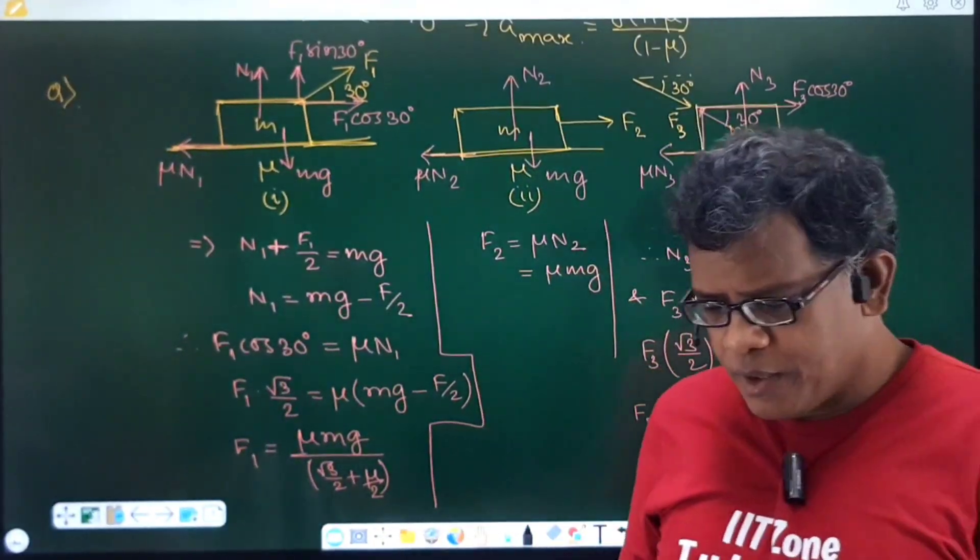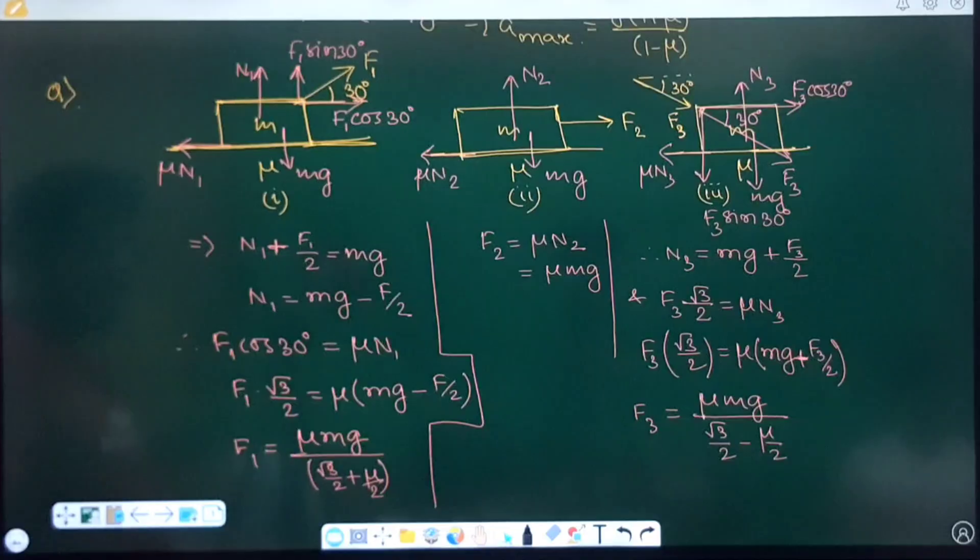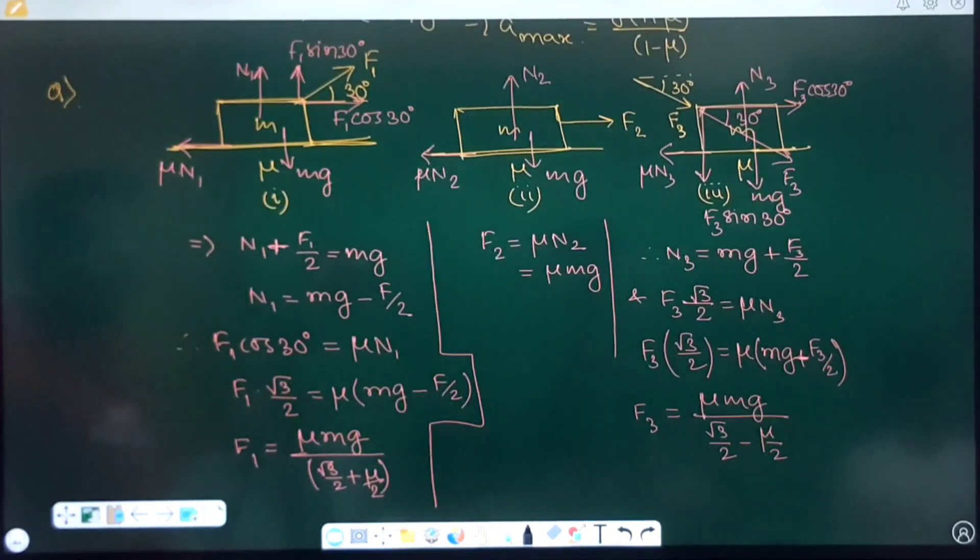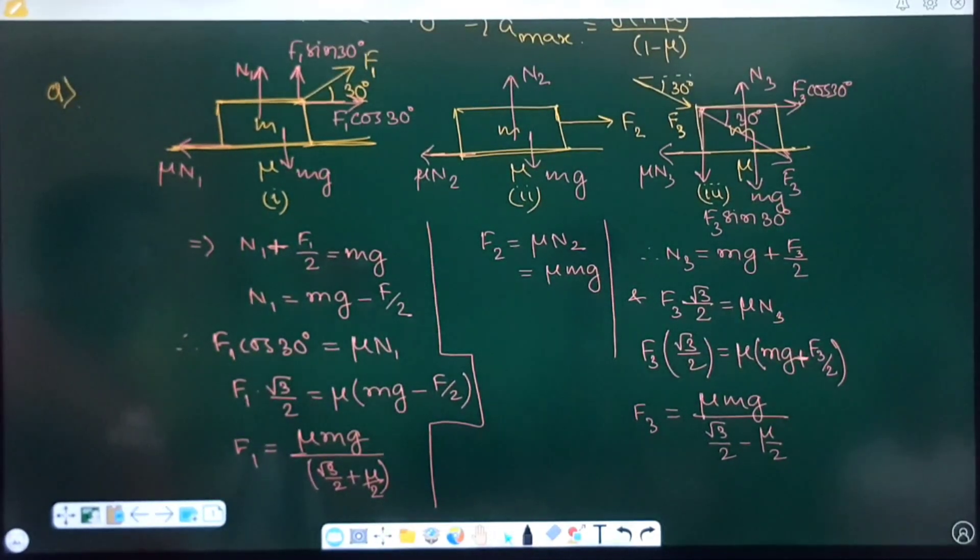I explained it while explaining the theoretical part. I said it earlier that whenever the normal reaction will be maximum, the limiting friction force will be maximum. So, it is according to the position of F1, F2, F3, it is clear from the FBD that if you add on the mass something vertically downward, then that additional force will get added with Mg and that will increase normal contact force. That has happened in the third case.